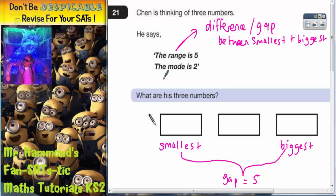Now the next clue, the mode is two. The mode means most popular. So the most popular number needs to be two. We're obviously going to need more twos than anything else. So we're going to have the smallest number there as two. And because we need more twos to make it the most popular, let's call the next number two.